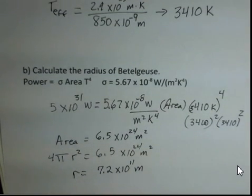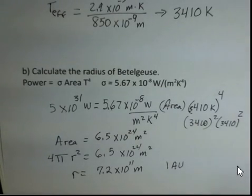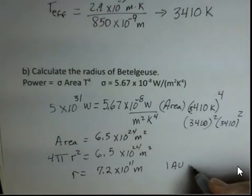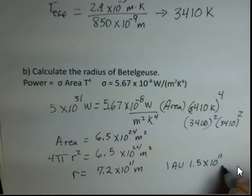What else do you know that is on the order of magnitude of this number? What distance is 10 to the 11th meters? Well, 1 AU, the distance of the sun to the Earth, is about 1.5 times 10 to the 11th meters.